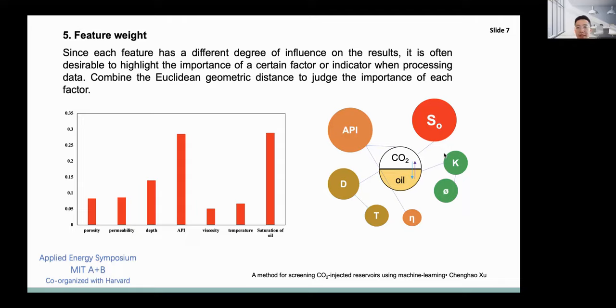It can be clearly seen that the two higher influencing factors are API and initial oil saturation, which also shows two main aspects of a reservoir's properties. One is how much oil can be developed in the current reservoir, and the other is whether it is easy to reach a miscible state with carbon dioxide, which determines the type of displacement and the recovery.